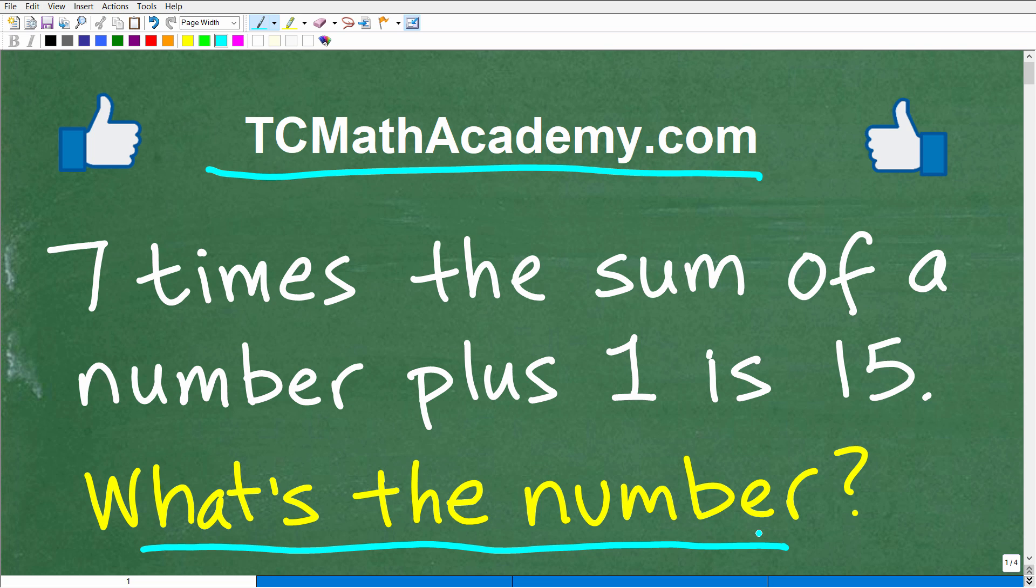So let me go ahead and actually read you the problem. It says 7 times the sum of a number plus 1 is 15. What is the number? I don't want to give you too many more hints because I want to give you a full opportunity to solve this all on your own. So if you can figure this out, go ahead and put your answer into the comment section. I'm going to show you the correct answer here in just one second and walk through the solution step by step.